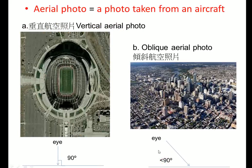For aerial photos we have two types. The first type is called vertical aerial photo. That means you take the photo exactly 90 degrees from the sky, and you get a photo like this. This is called a vertical aerial photo.